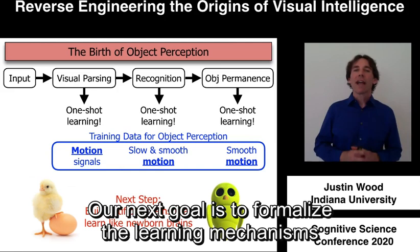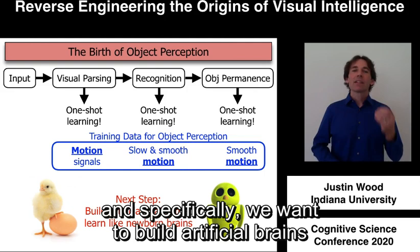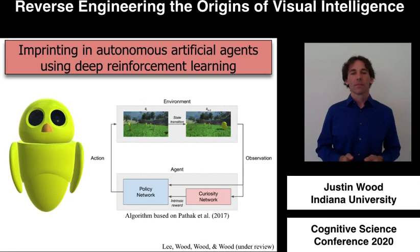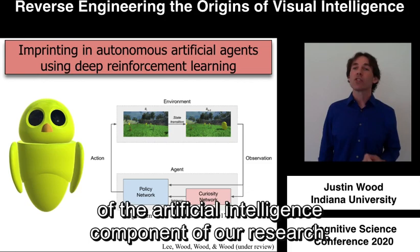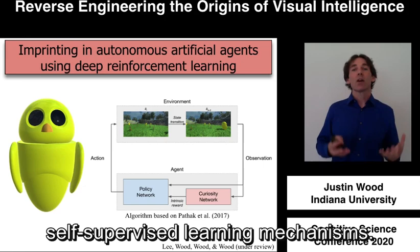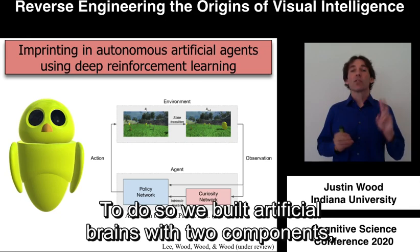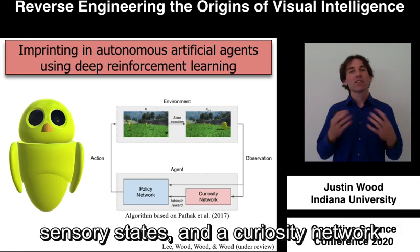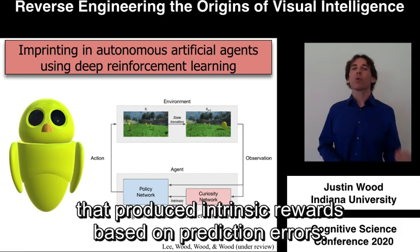Our next goal is to formalize the learning mechanisms that underlie object perception, and specifically we want to build artificial brains that learn like newborn brains. We built artificial brains with two components: a policy network that selected actions based on perceived sensory states, and a curiosity network that produced intrinsic rewards based on prediction errors. Since our studies with chicks depend on imprinting, our first step was to build artificial agents that develop imprinting behavior using self-supervised learning mechanisms.